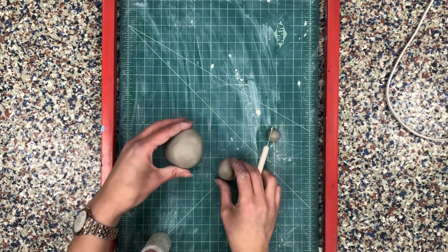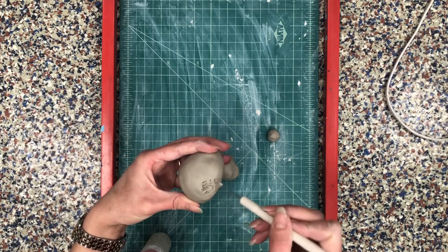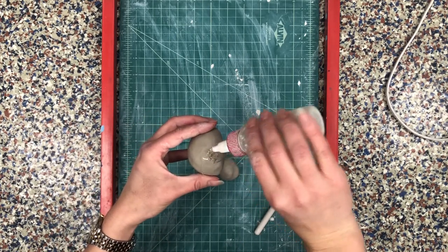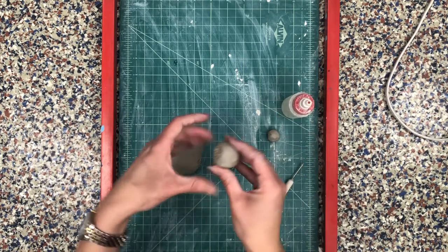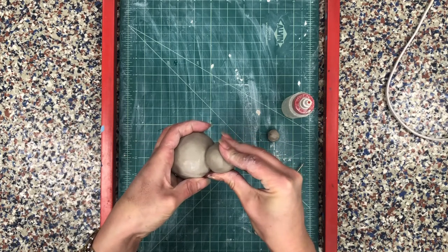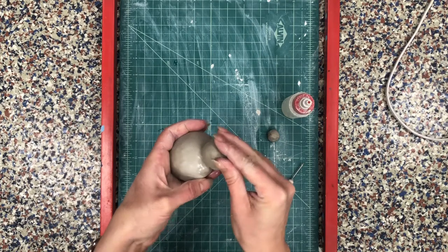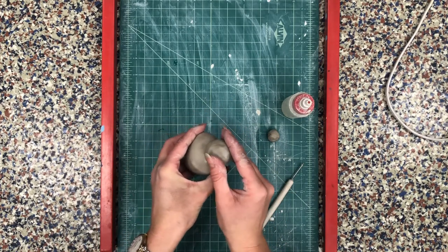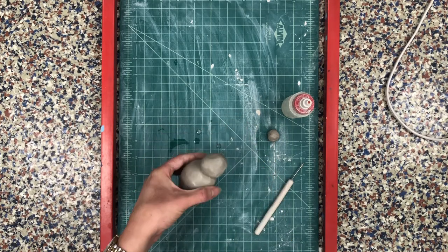And then wherever I'm going to stick the head on I'm going to do the same thing. Just score it up really good and messy. Then I'm going to add a few drops of water to each side, not too much, and then I'm going to gently kind of press and wiggle those two pieces together. That will make your clay pieces stick. Don't forget to do your slipping and scoring otherwise your head will fall apart from the body.